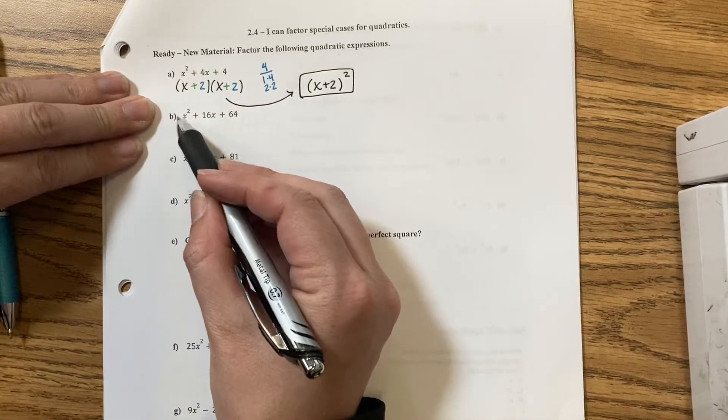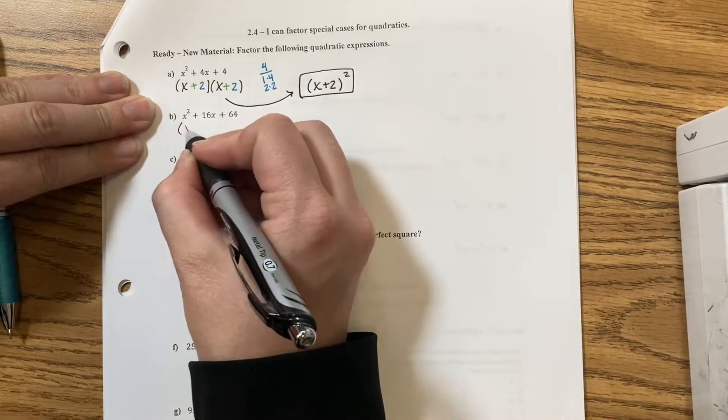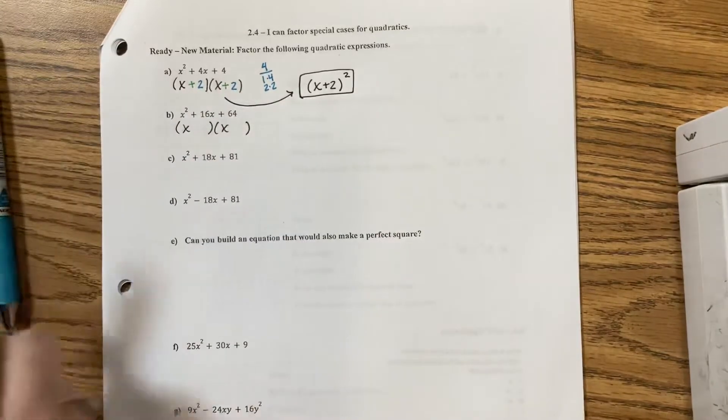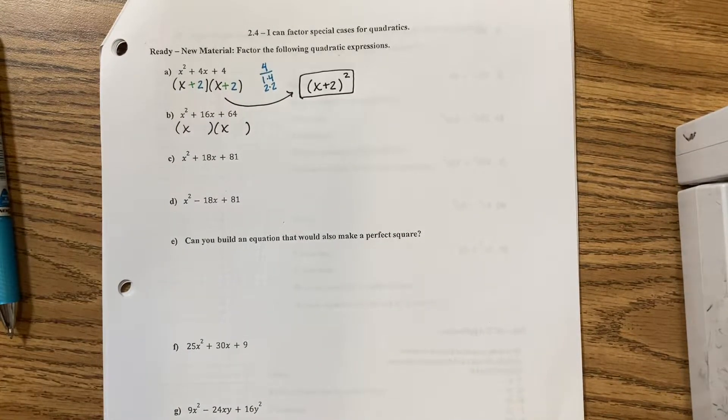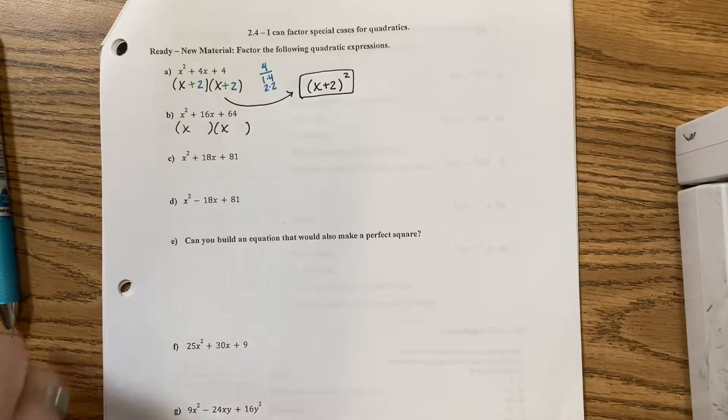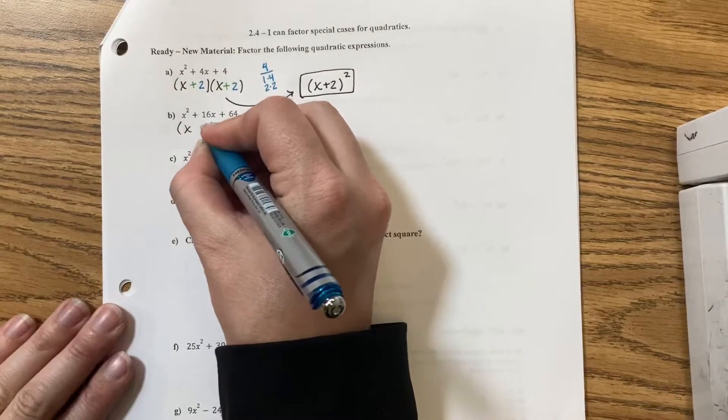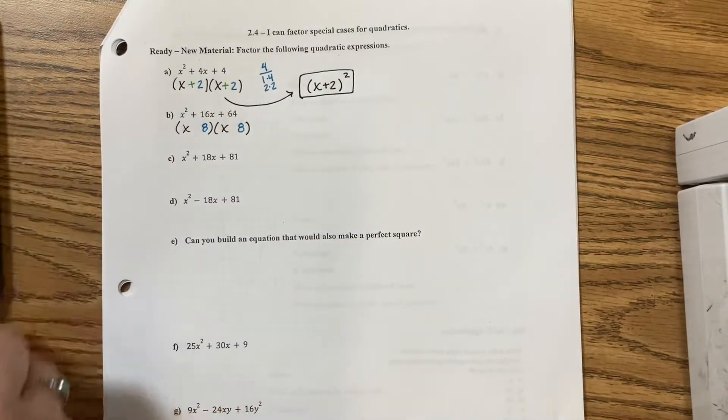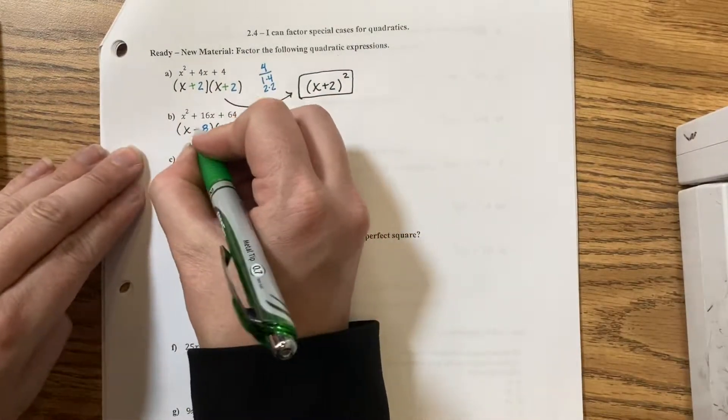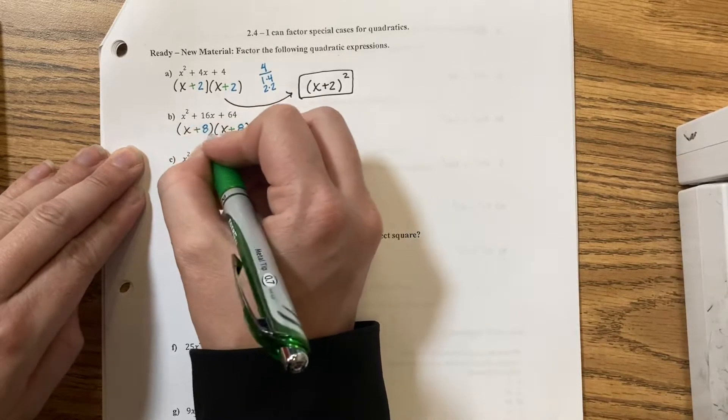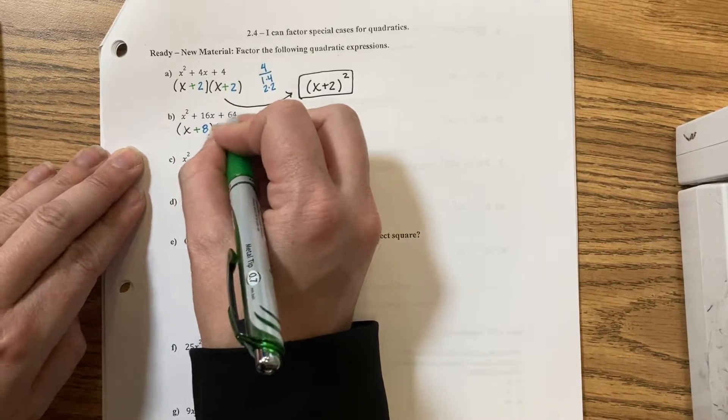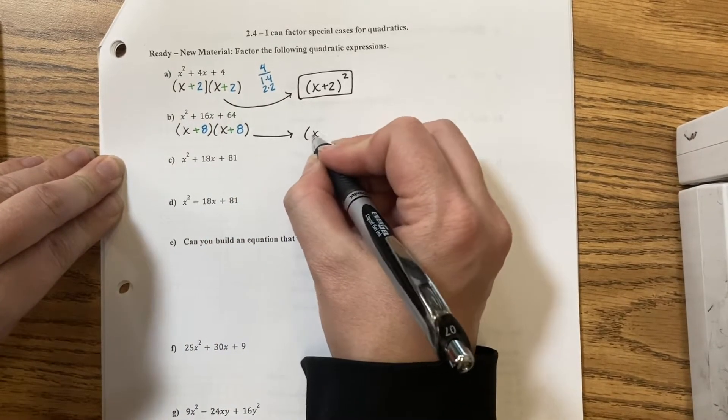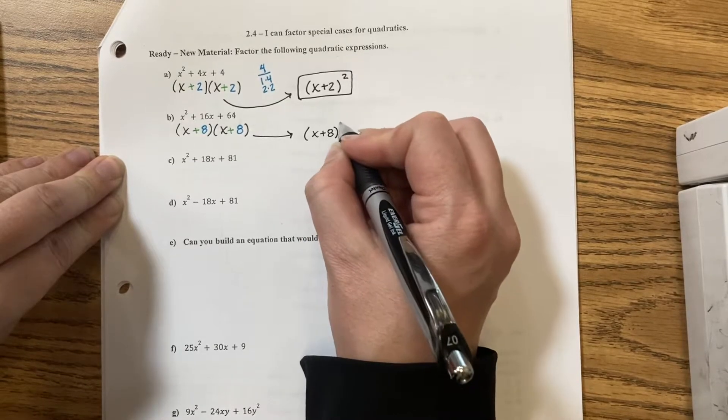Next one. I don't have a value in front, so I can write x times x is x squared. When I break down 64, it will be 8 times 8. 8 times 8 is 64. And to get them to make a plus 16, I need to add both. 8 plus 8 is 16. They multiply to make a positive 64. Or when I simplify it, it's x plus 8 squared.